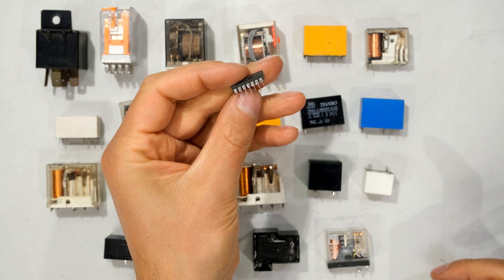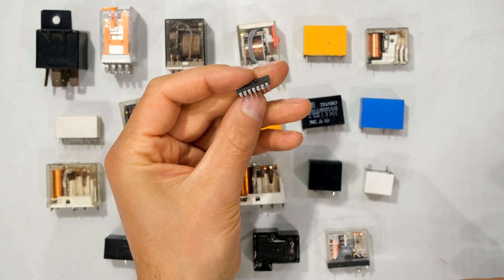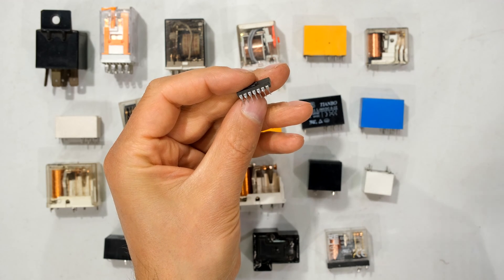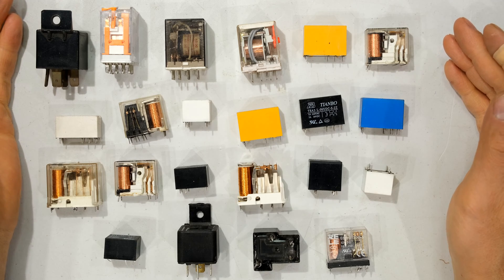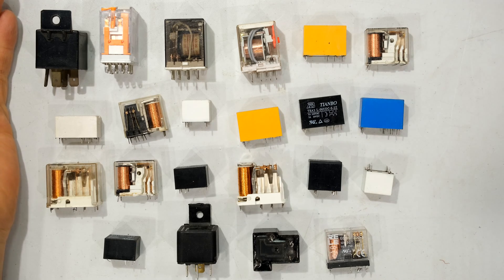Sometimes you may need a DC circuit to control an AC circuit. For example, you might want to use a little microcontroller to control an AC circuit or even a higher current DC circuit. So the main purpose of the relay is to use one circuit to control another circuit.